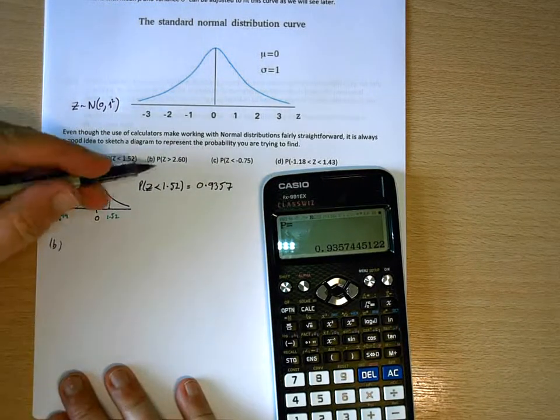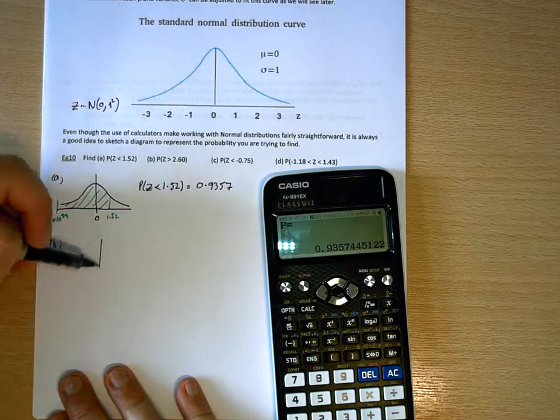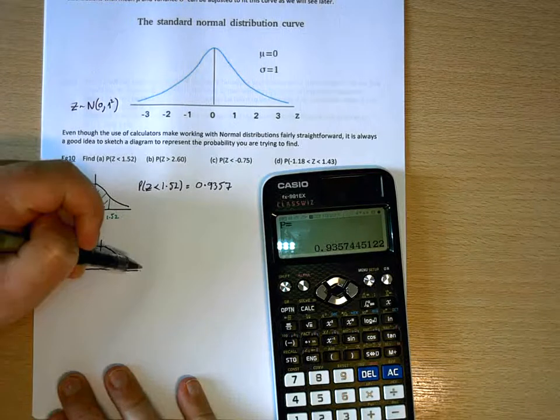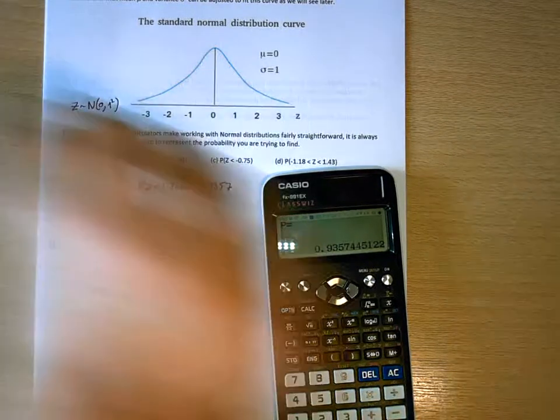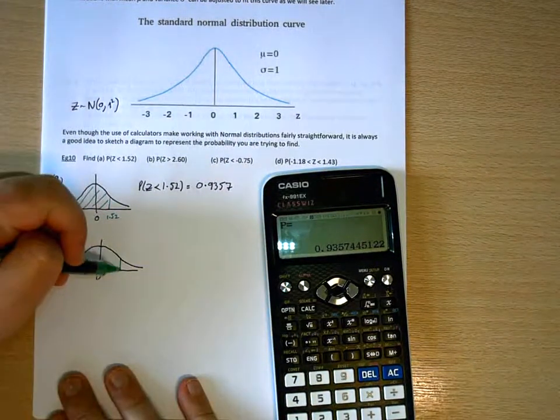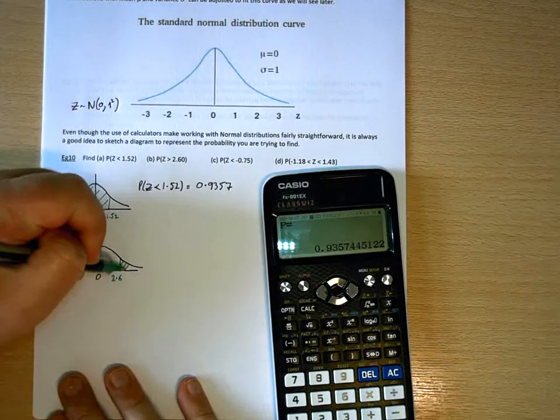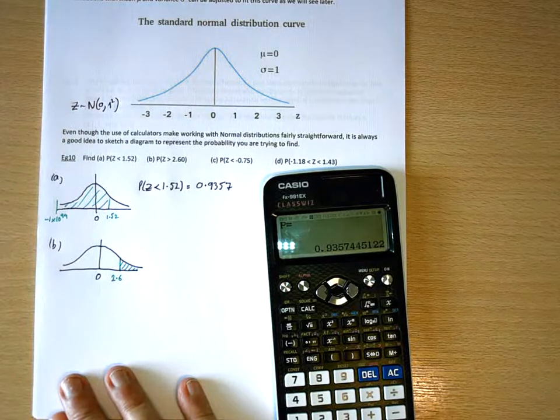B, probability that Z is greater than 2.6. So greater than 2.6 is this side of the curve again. But this time, I'm interested in that region.